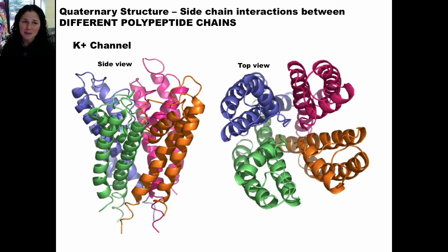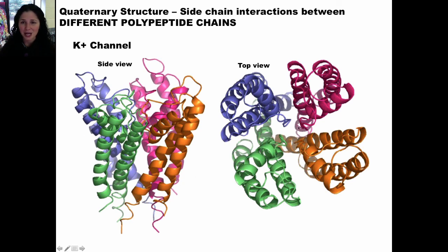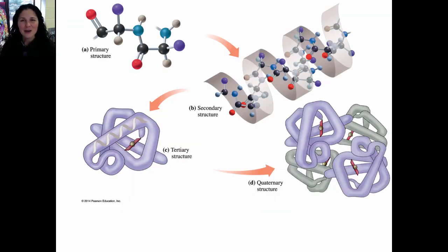Here's another example: a potassium channel, which is also four different proteins. It's a coincidence that I showed you two proteins with four chains each — quaternary structure does not have to have four proteins; it could be just two or three. The potassium channel allows potassium to flow through the cell membrane — potassium is an ion and cannot get through the lipid bilayer without a protein channel. Here's the protein channel lying within the membrane, and here's the top view where you can see the channel which potassium flows through. Every one of these different colored proteins is actually the same type of protein, but you need four of them to make the active channel.